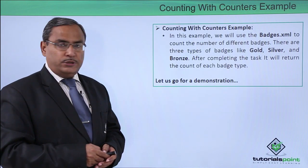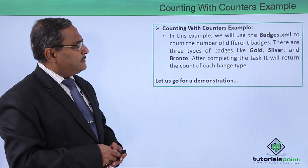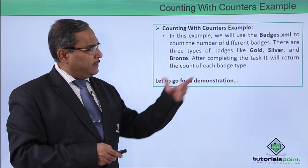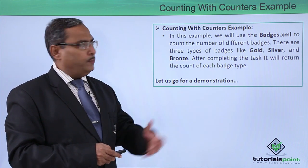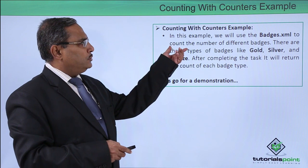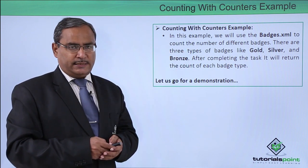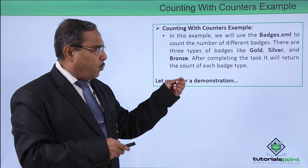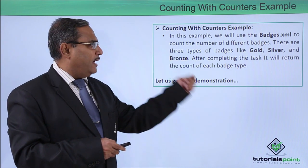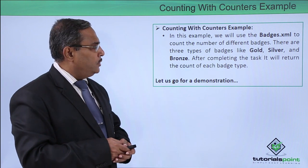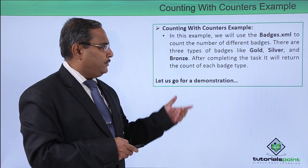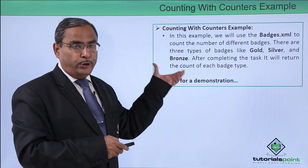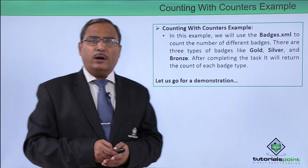In this counting with counters example, we will be using batches.xml. Our program will work on this XML file and count the number of different batches. The batches have different categories — three types: gold, silver, and bronze. After completing the task, it will return the count of each batch type.